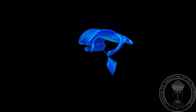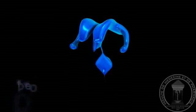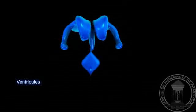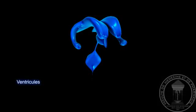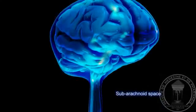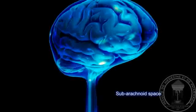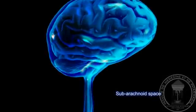The CSF circulates in two different compartments. The first is the inner brain ependymal cavities, or ventricles. The second is the compartment surrounding the central nervous system. It corresponds to the subarachnoid space.